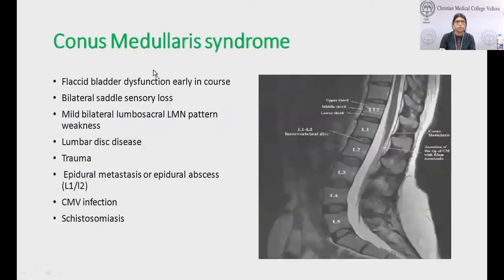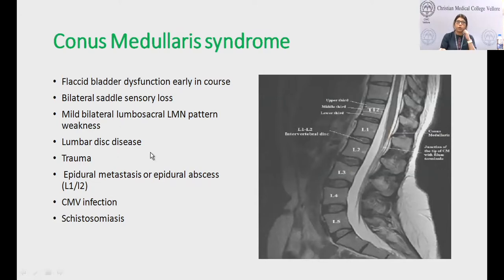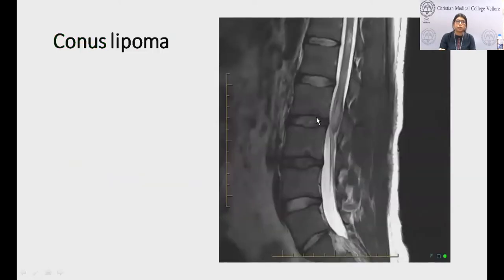In conus and cauda involvement there can be false localizing signs. The spinal cord ends in adults at the lower border of L1. Conus medullaris syndrome presents with early bladder dysfunction — an LMN-type bladder — with bilateral saddle sensory loss due to S2–S5 dermatome involvement. Bilateral lumbosacral LMN weakness is present but mild. The most important presentation of conus lesion is saddle anesthesia and LMN bladder involvement. Common disorders are lumbar disc disease, trauma, and epidural metastasis.